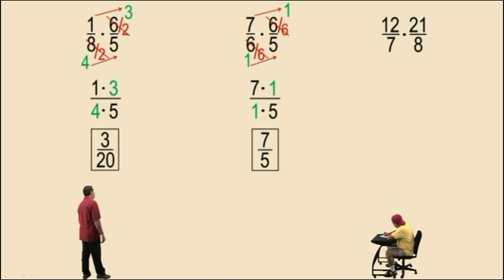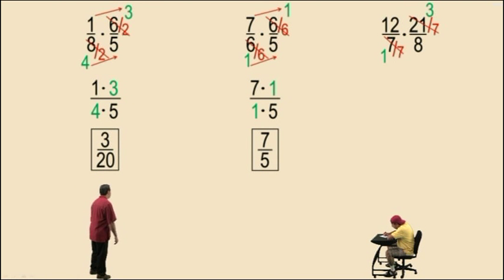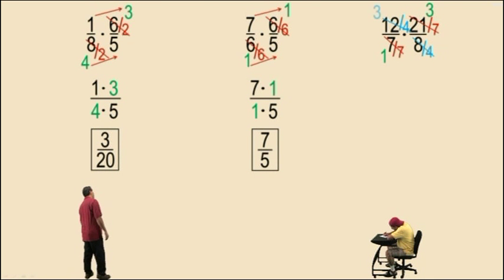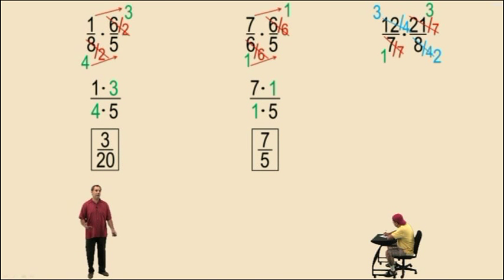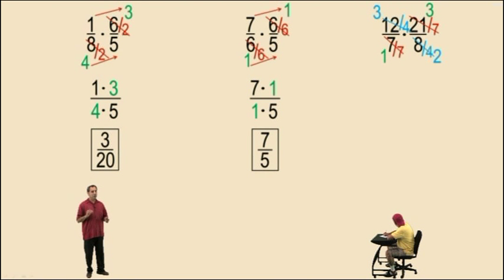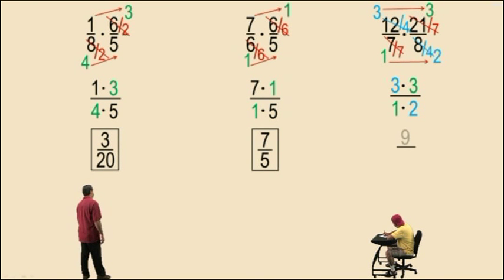Here we have 12 sevenths times 21 over 8. 21 and 7 have a common factor of 7. 21 divided by 7 is 3, 7 divided by 7 is 1. Now 12 and 8 have a common factor of 4. 12 divided by 4 is 3, and 8 divided by 4 is 2. Some people see a common factor of 2 in 12 and 8, but you'll have to reduce again in the next step. No matter how you approach the problem, we all end up with the same answer. In our numerator we have 3 times 3, and our denominator is 1 times 2. Therefore our answer is 9 over 2.